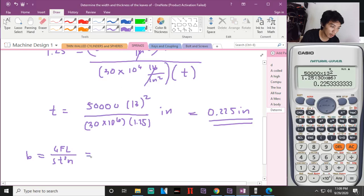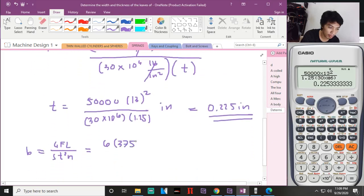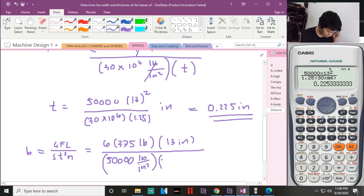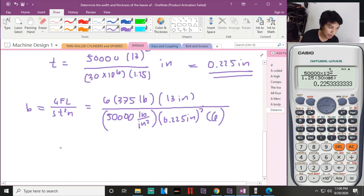Now, 6 times F. What's the loading? 375 pounds times L, that's 13 inches, over s, that is 50,000 pounds per inch squared, times t. What's the thickness we got? 0.225 inch squared, times number of leaves. That's 6, yes.